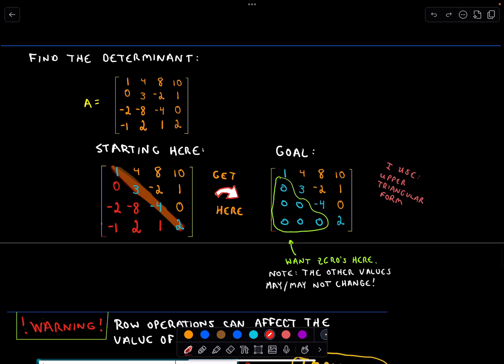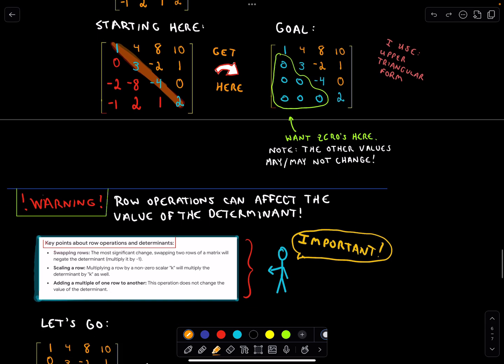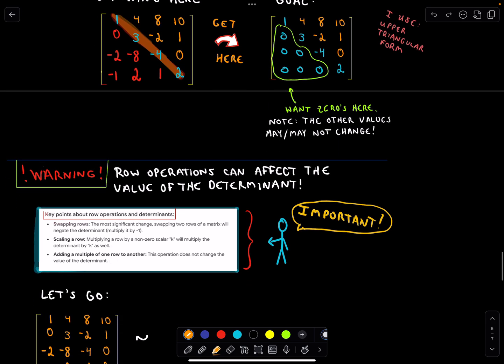Once we have it in that form, we can simply multiply the elements along the main diagonal to find the determinant. One important word of caution: it is possible, because we're doing row operations, to change the value of the determinant. One of my examples, the value of the determinant did not change.